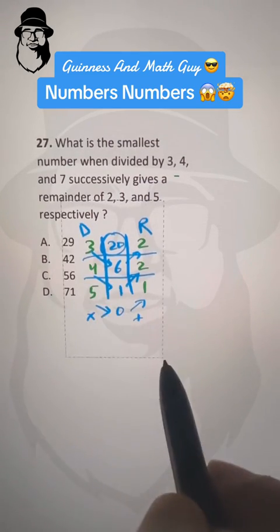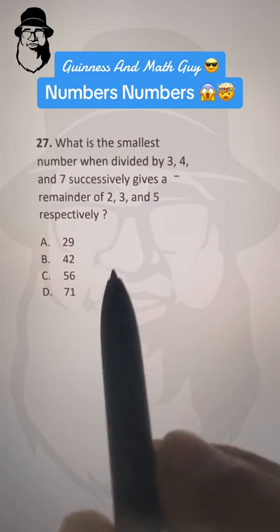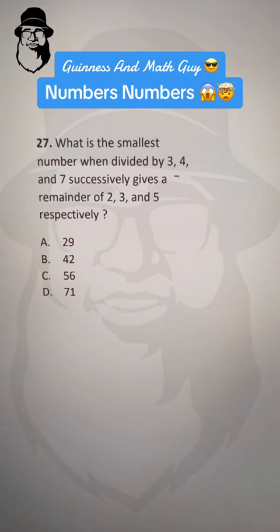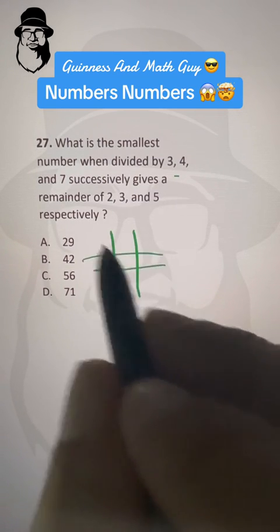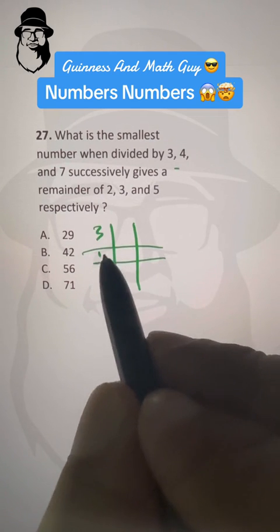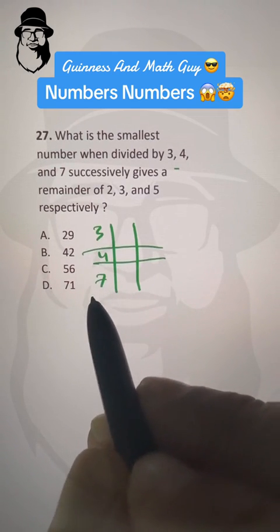Now come to the question again. When in competitive exams or competition exams, we have less time, so we can just make these. Divisors are 3, 4, and 7, same.